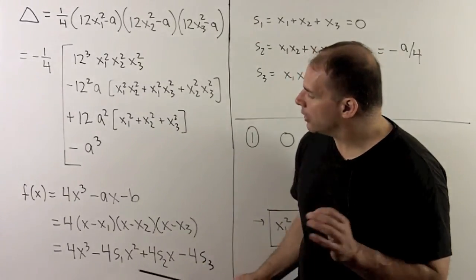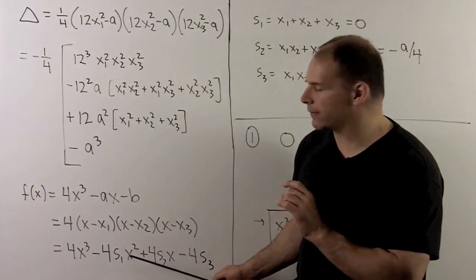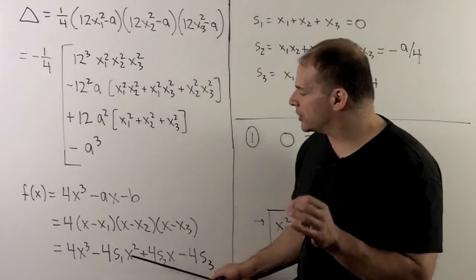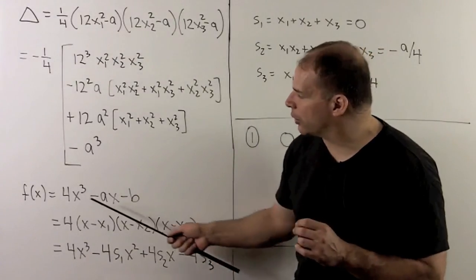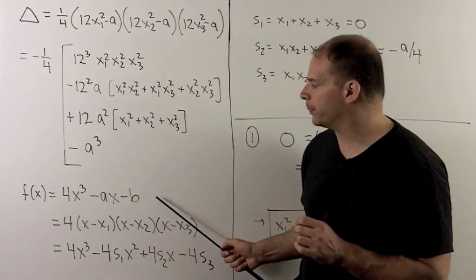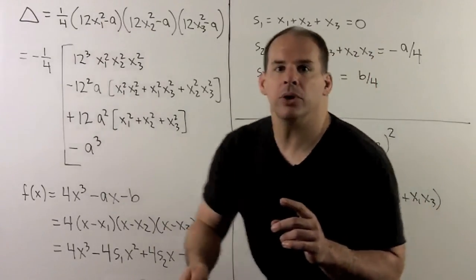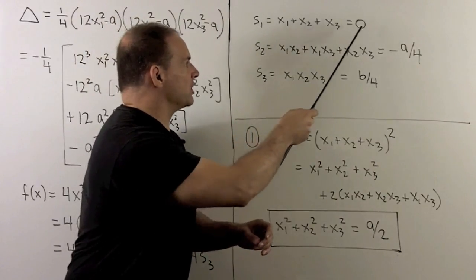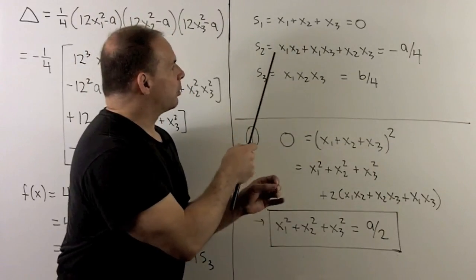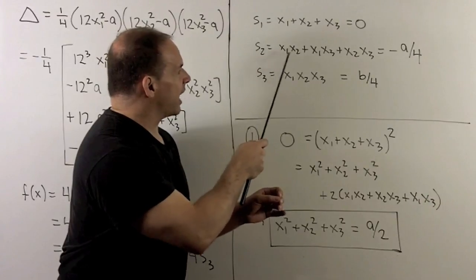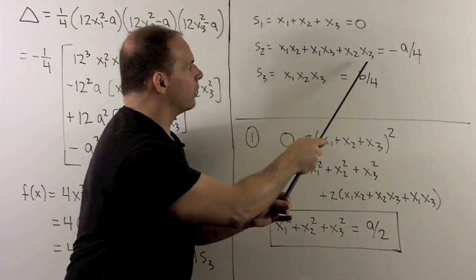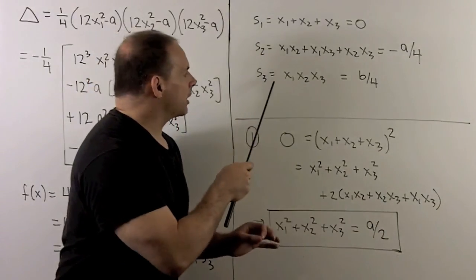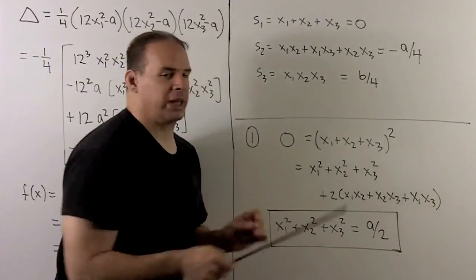If we expand here, the coefficients are going to be symmetric functions of x₁, x₂, and x₃. We can substitute these out by saying it equals our special case. For instance, we have x₁ + x₂ + x₃ is zero. If we take the product of any two distinct x's, and then sum over all those, we get -a/4. If we take the product of all three, we get b/4.